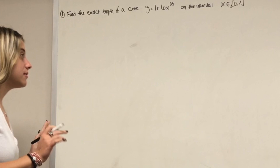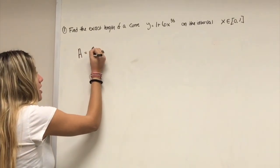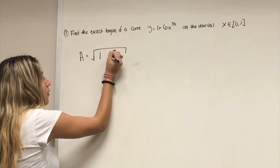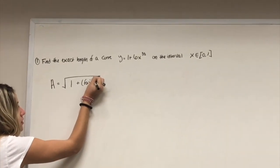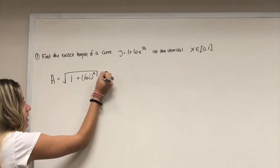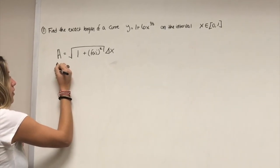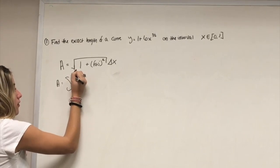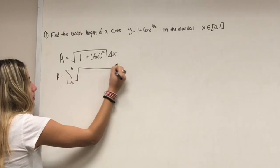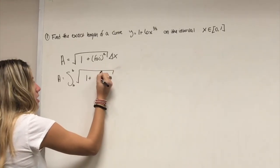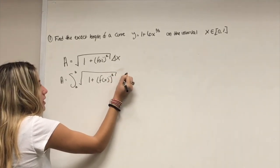The first thing you want to memorize is that arc length equals the square root of 1 plus the derivative of f(x) squared times the change in x. In interval form, arc length equals the integral from a to b of the square root of 1 plus f'(x) squared dx.